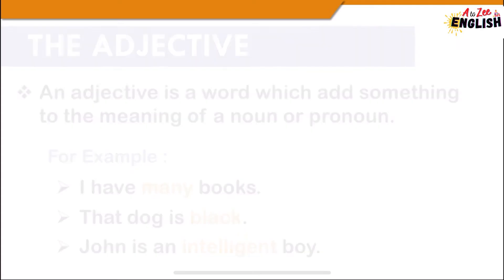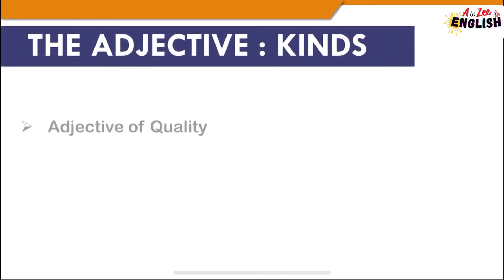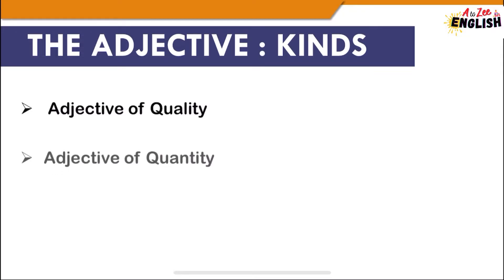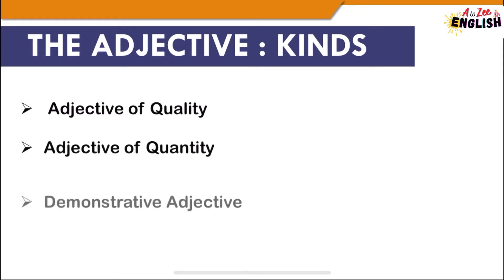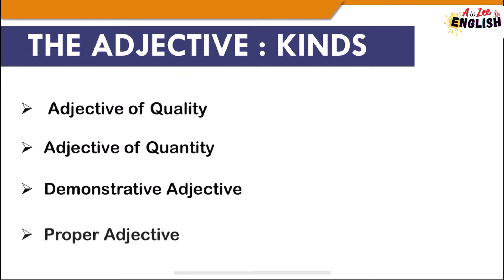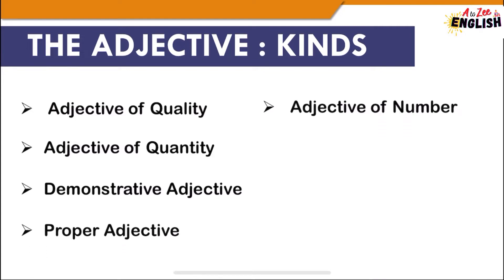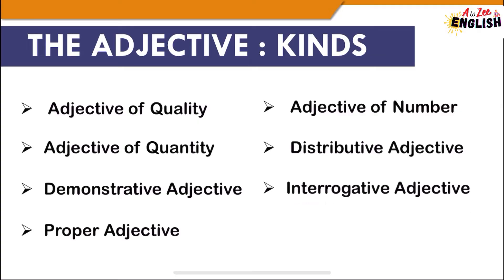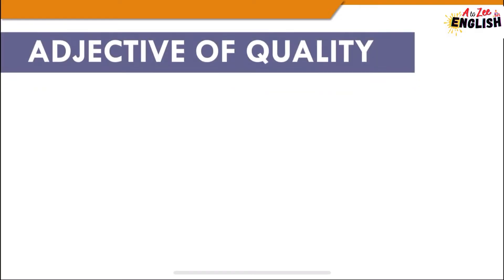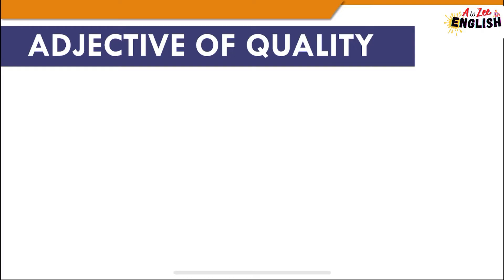There are various kinds of adjectives: adjective of quality, adjective of quantity, demonstrative adjective, proper adjective, adjective of number, distributive adjective, interrogative adjective, and possessive adjective. We will now discuss each one. The first is adjective of quality, also called a descriptive adjective.